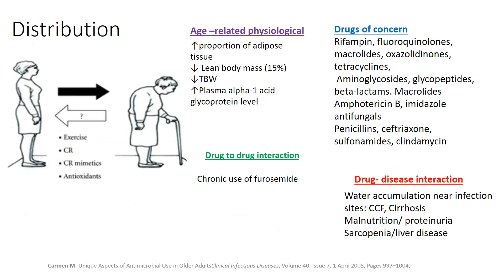Regarding distribution — as we age, there's an age-related increase in the proportion of adipose tissue, which can affect lipophilic antibiotics by increasing their half-life as they become more readily soluble in tissue compartments. Antibiotics of concern here include rifampicin, fluoroquinolones, macrolides, and tetracyclines. Concomitantly, there can be a decrease in lean body mass of up to 15% and a decrease in total body water, which can affect water-soluble antibiotics by increasing their plasma concentration. These include aminoglycosides, glycopeptides, and beta-lactams.